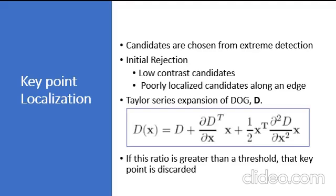Key point localization: once potential key point locations are found, they have to be refined to get more accurate results. They use Taylor series expansion of scale space to get more accurate location of the extrema. If the intensity at this extrema is less than a threshold value, which is 0.03 in the paper, it is rejected.